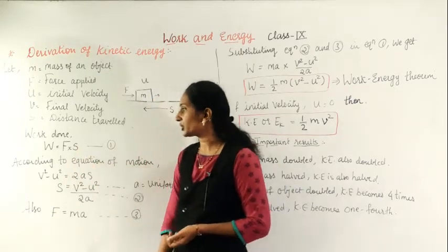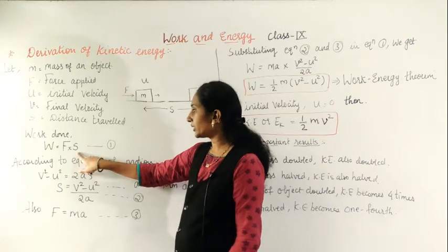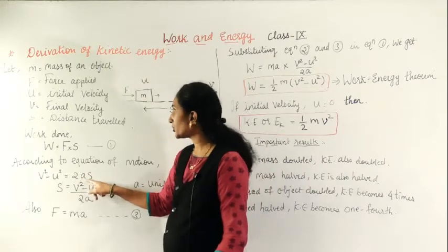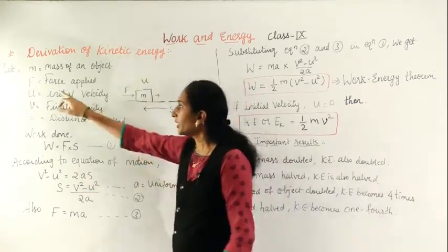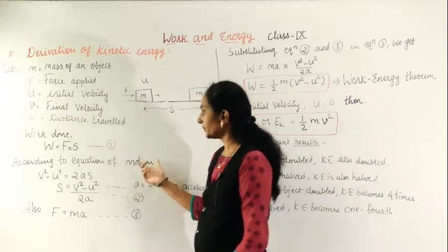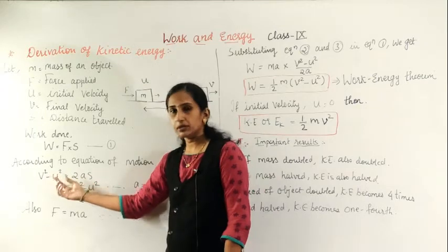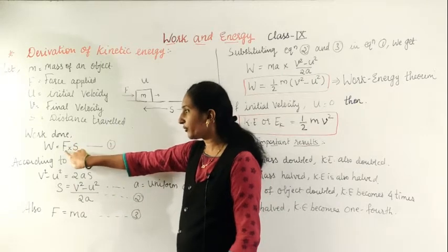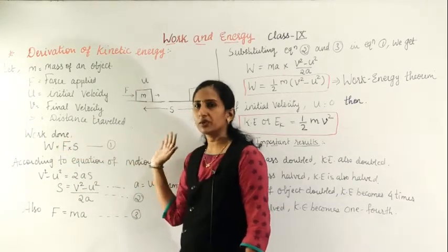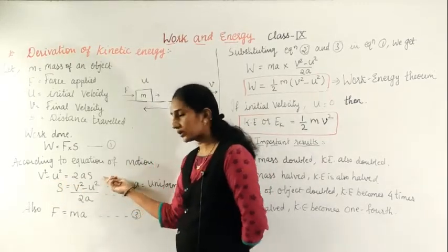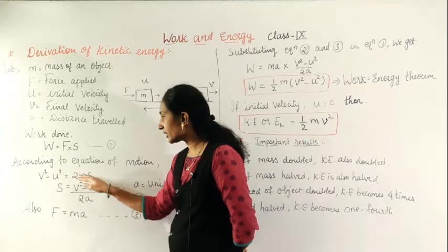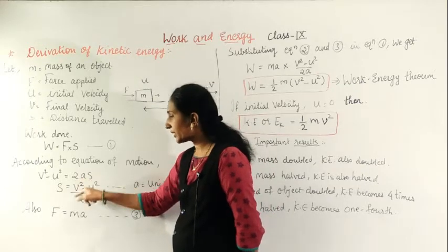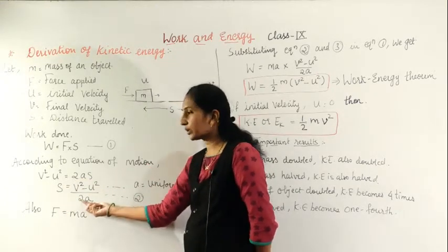To find s, you will use the third equation of motion: v² − u² = 2as. This equation is chosen because there is no time factor — it contains initial velocity u, final velocity v, and acceleration a. Rearranging to find s: take 2a to the other side, so s = (v² − u²) / 2a. This is equation number 2.